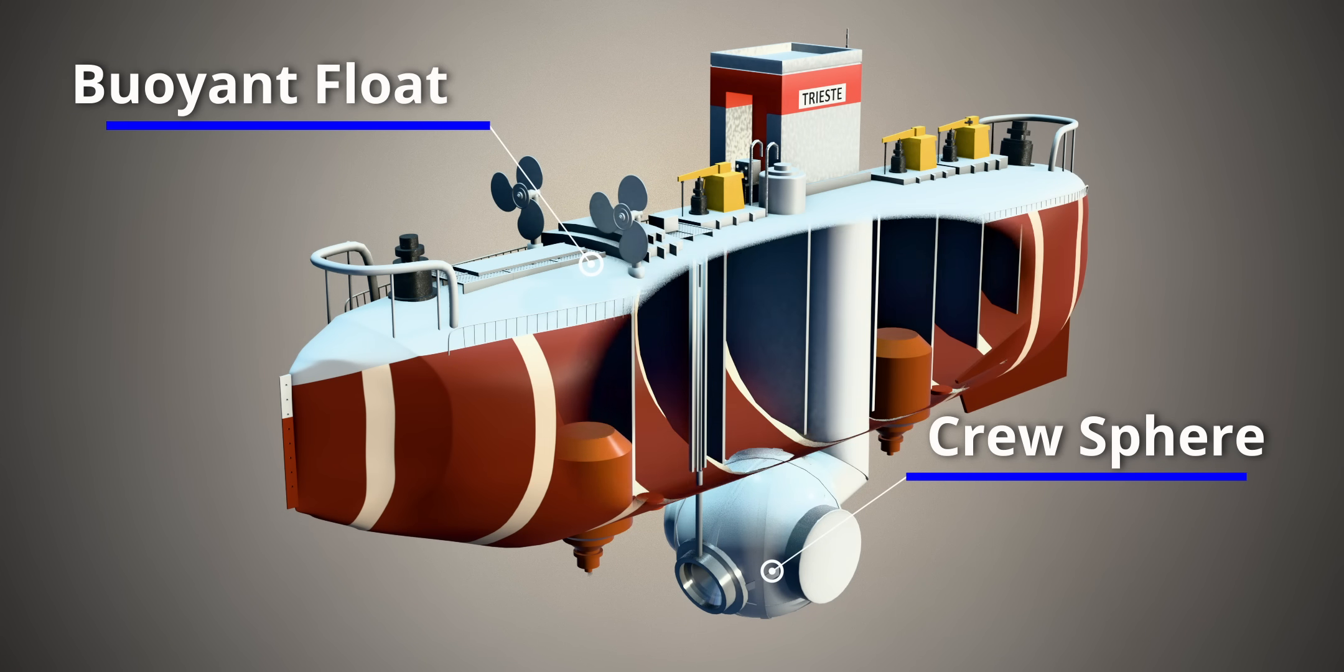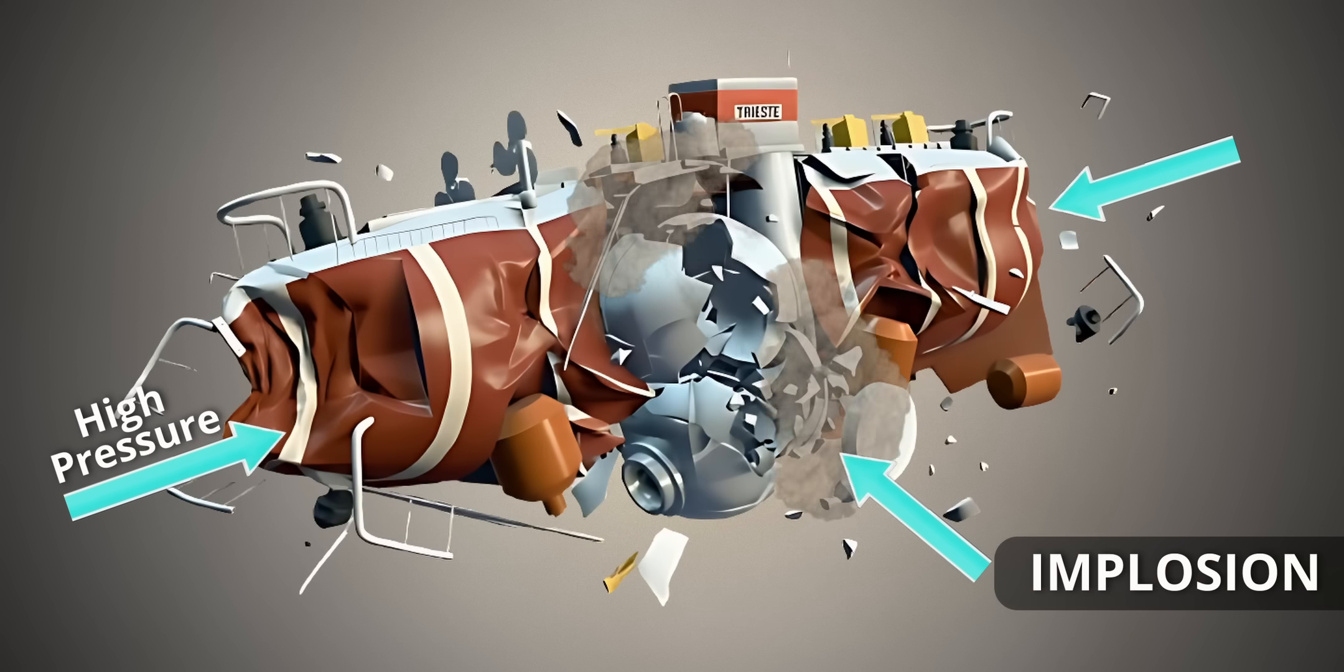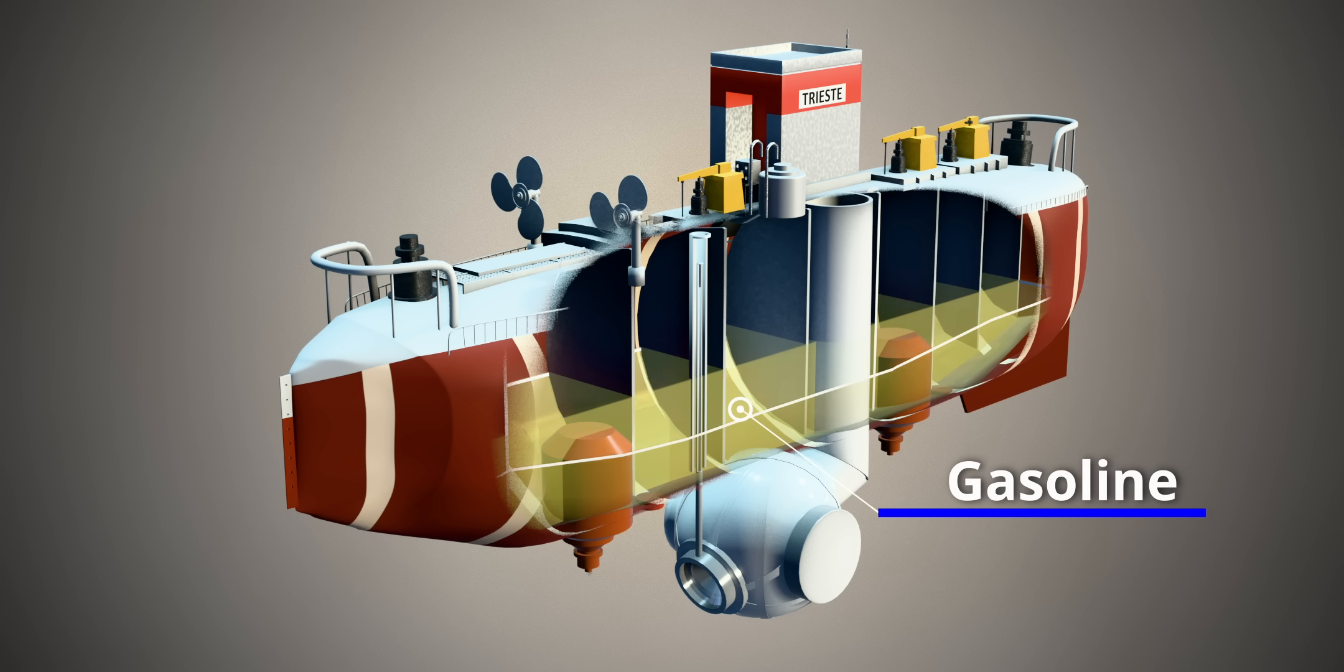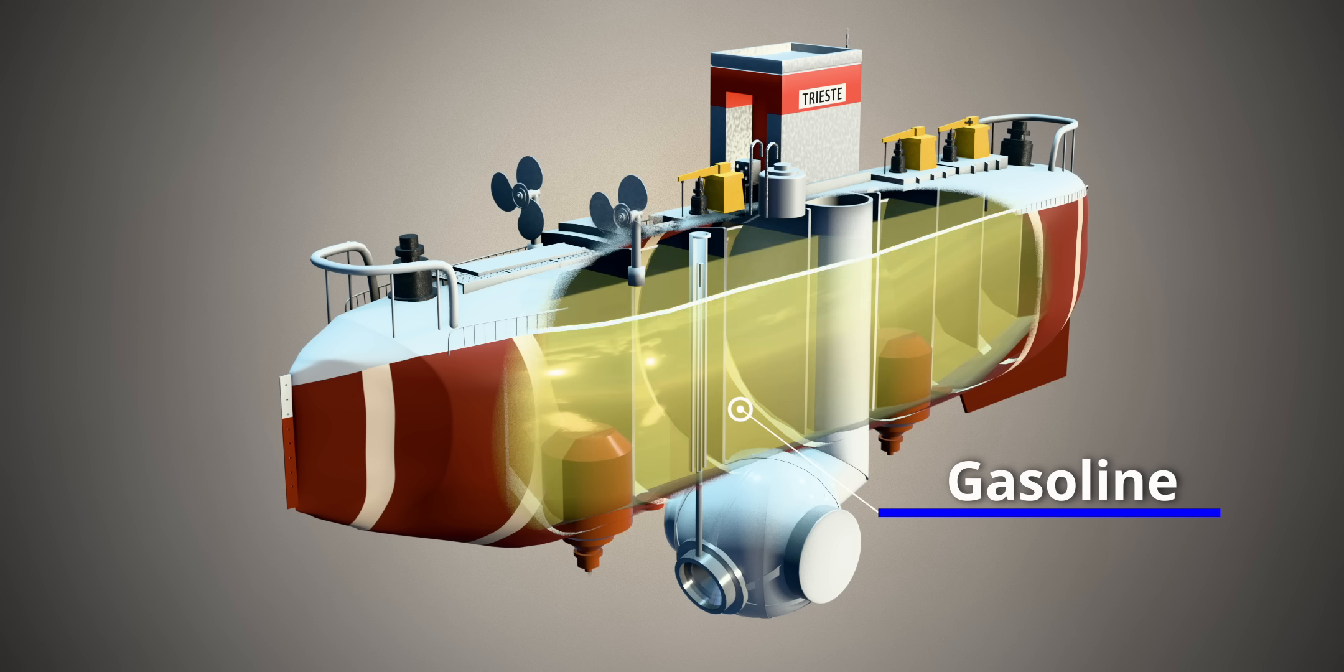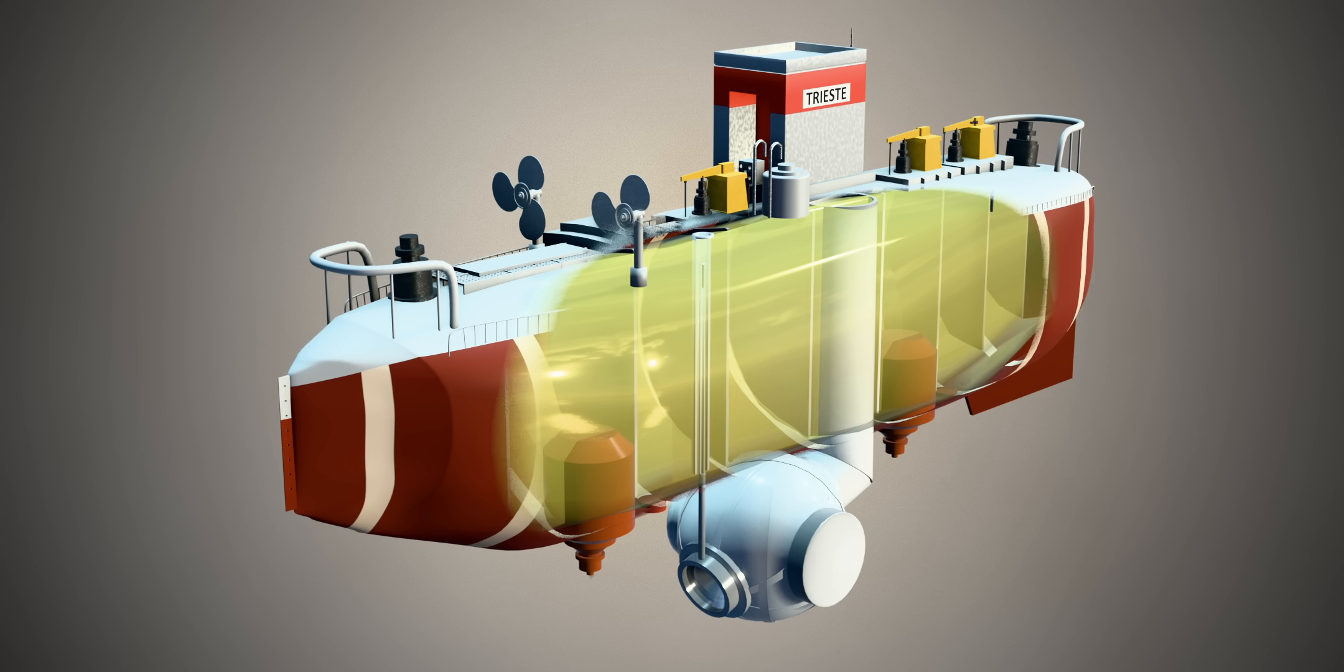To achieve buoyancy, you can't use compressed air as it would be crushed. Instead, the Trieste used a massive 15 meter long thin walled float filled with 320,000 gallons of aviation gasoline. As gasoline is lighter than water, it provides the positive buoyancy needed to lift the craft.